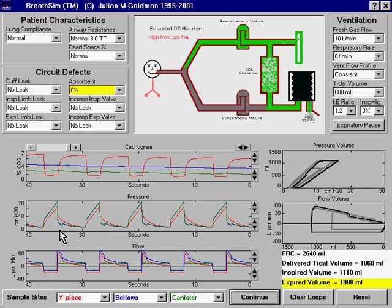Notice again that as the CO2 is being washed out of the bellows by the high fresh gas flow, it's also being washed out of the canister. The canister is being graphed in green and the bellows in blue.